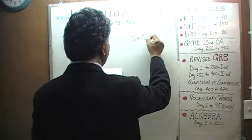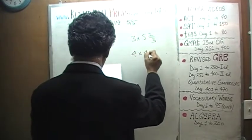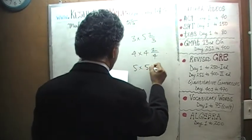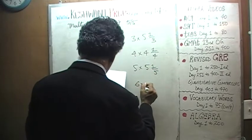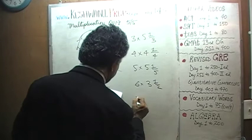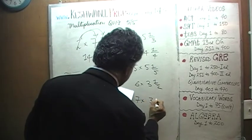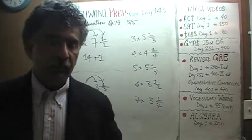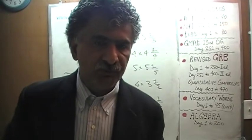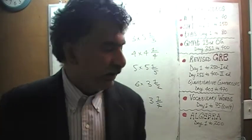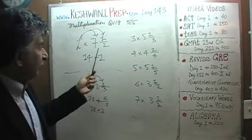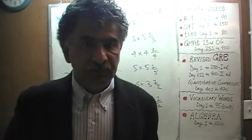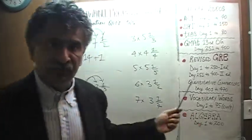There are a few more: three times five and one third, four times four and one quarter, five times five and one fifth, six times three and a half, and seven times three and one seventh. The reason we are doing these problems is because many times people, when they have to multiply a number by a mixed number, they freak out.